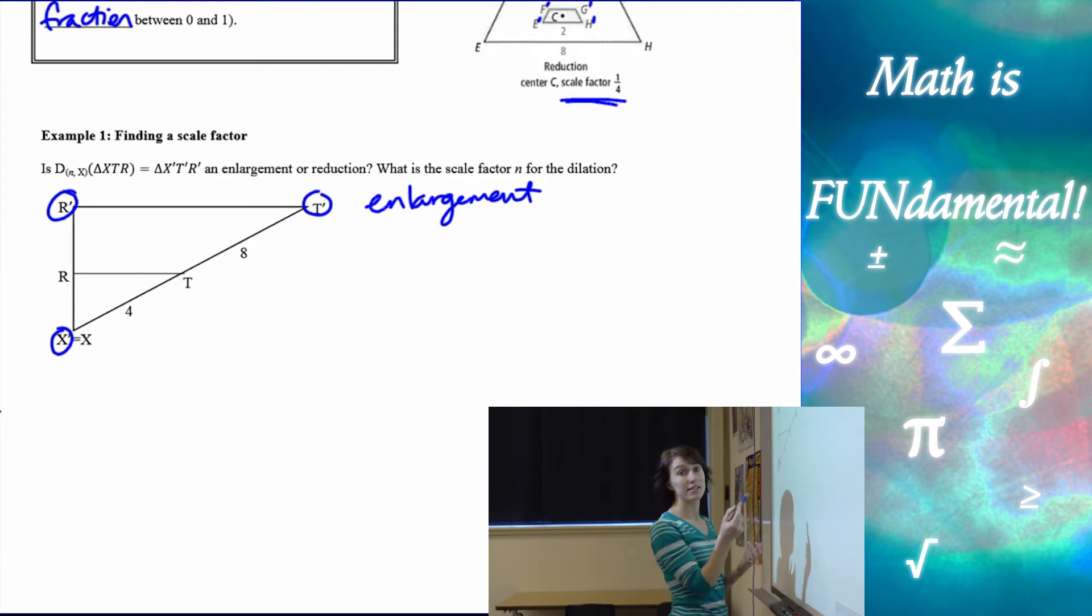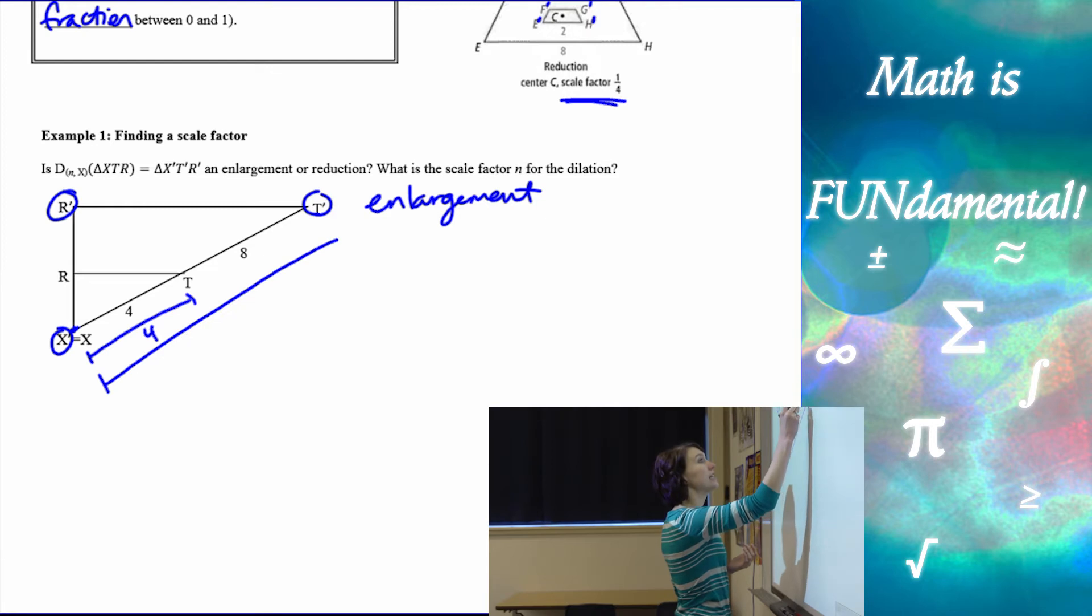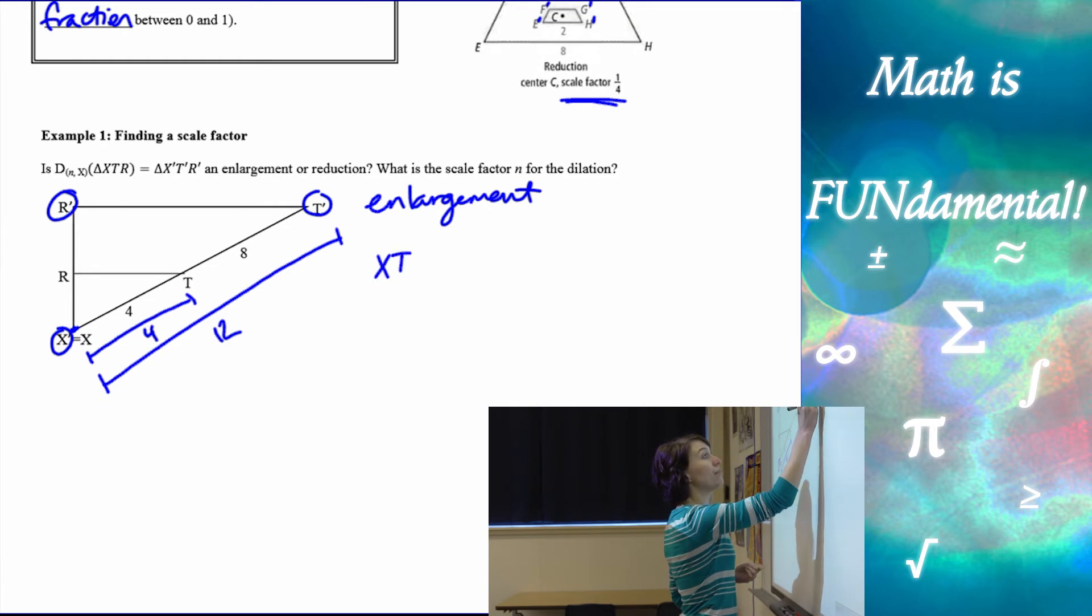So if we separate the two, I know that X is my center of dilation, X, T is 4, and X, T prime is 12. It is not 8.